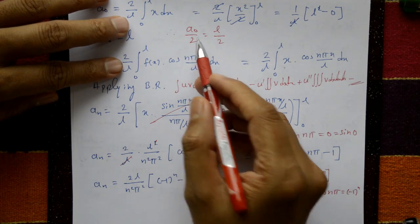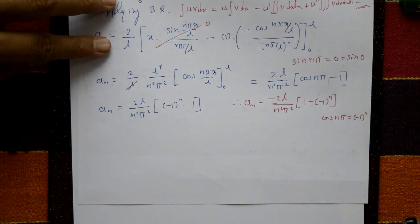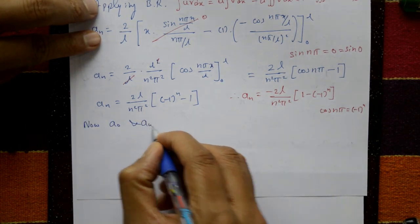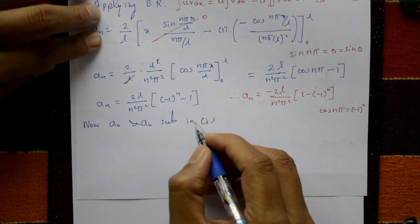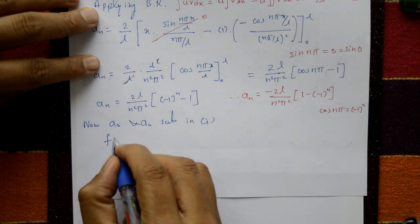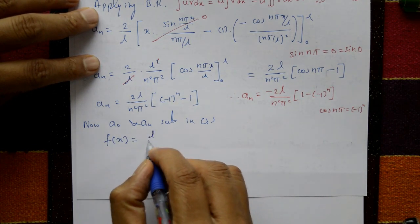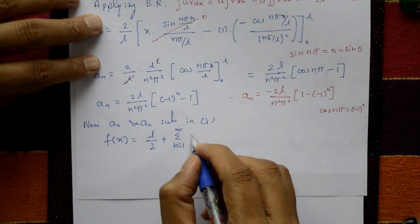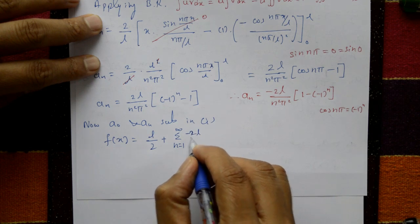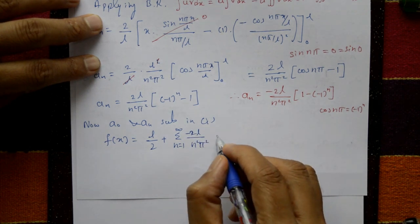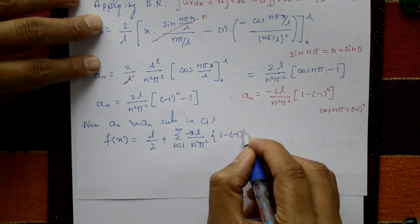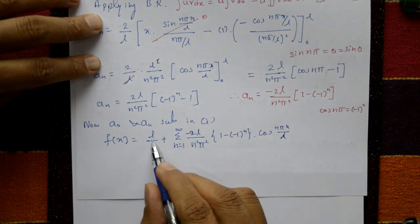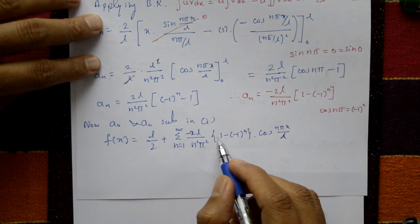Now substitute a₀/2 = l/2 and aₙ into equation number one. We get f(x) = l/2 + summation n=1 to infinity of [minus(2l/n²π²)(1 minus (minus 1)ⁿ)] cos(nπx/l). This gives the required Fourier series.